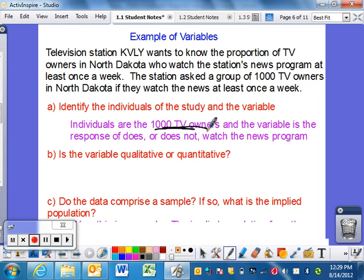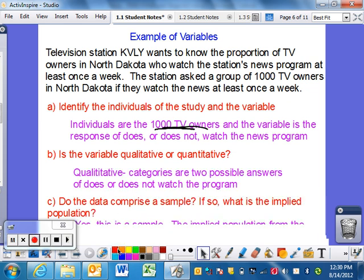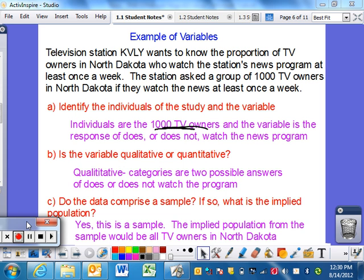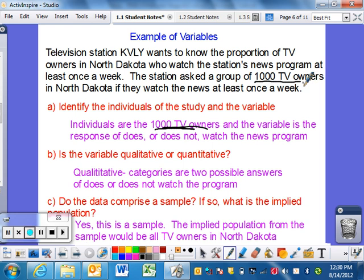Is the variable qualitative or quantitative? Definitely qualitative, as the categories are two possibilities: does and does not. Do the data comprise a sample? Absolutely, because it's just 1000 of the many people in North Dakota who own a TV. What is the implied population? The implied population from the sample would be all TV owners in North Dakota.